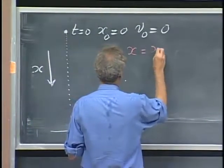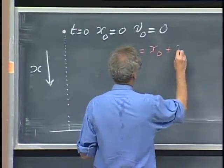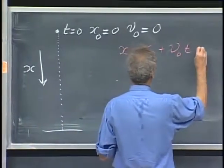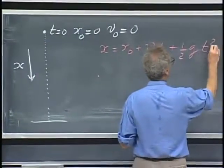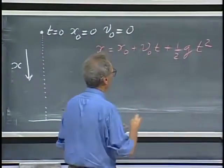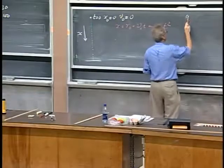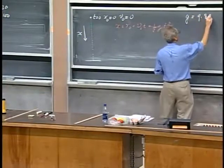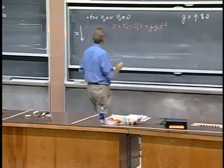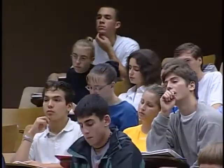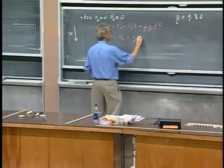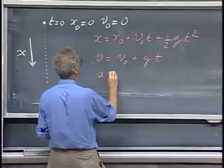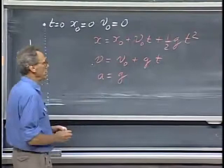x equals x zero plus v zero t plus one-half g t squared. And g now is 9.80 meters per second squared. The velocity at any moment in time equals v zero plus g t, and the acceleration is constant, is simply g.